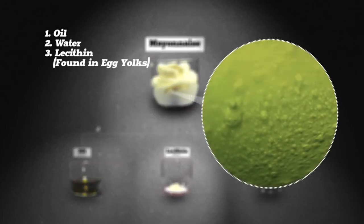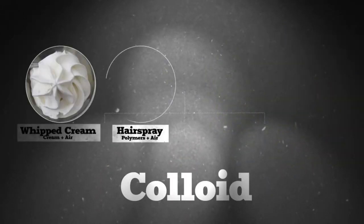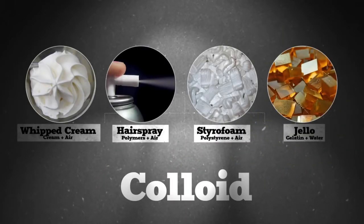And now you're left with really small globs of oil hanging out with really small droplets of water. Whipped cream, hairspray, styrofoam, and jello are all other examples of colloids.